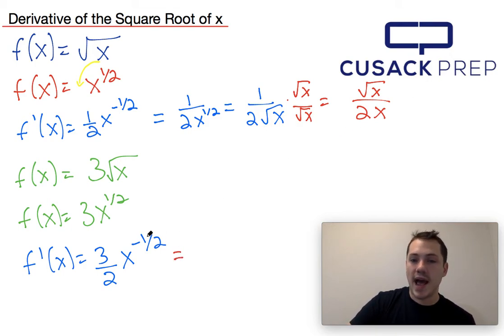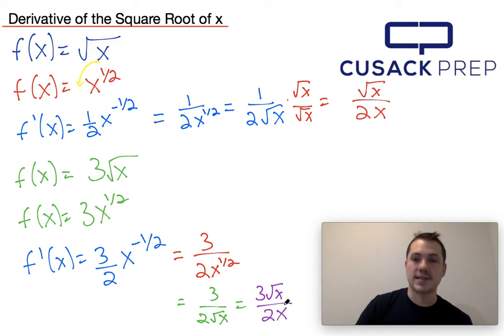Now the negative 1 half will cause the x to drop down into the denominator. So this would be 3 over 2x to the 1 half, which again we could choose to write as 3 over 2 root x. And if we rationalize it just as we have up here, we would find that this is equal to 3 root x over 2x. And again, any one of those answers might appear.